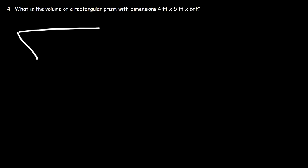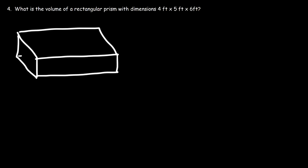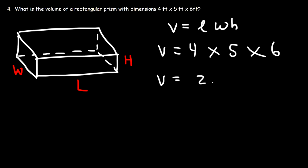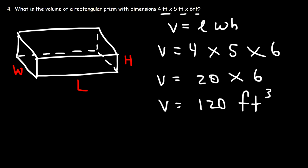Here's the rectangular prism — it looks like a box. To find the volume, multiply the length by the width by the height. It doesn't matter what order you multiply the three numbers, so it's 4 feet times 5 feet times 6 feet. 4 times 5 is 20, and 20 times 6 is 120 (like six twenty-dollar bills). Since we multiplied feet by feet by feet, the answer is 120 cubic feet.